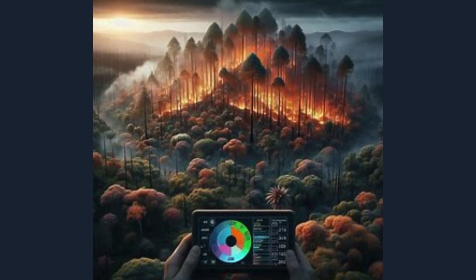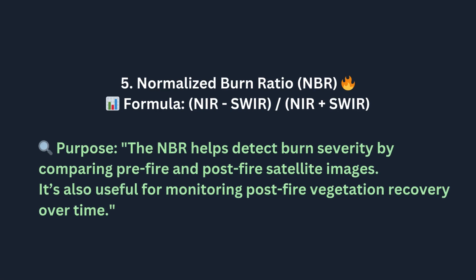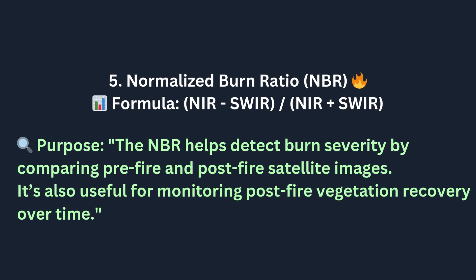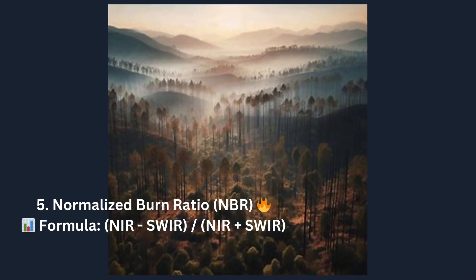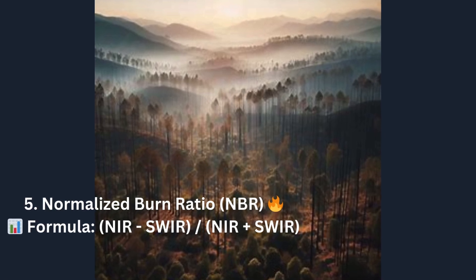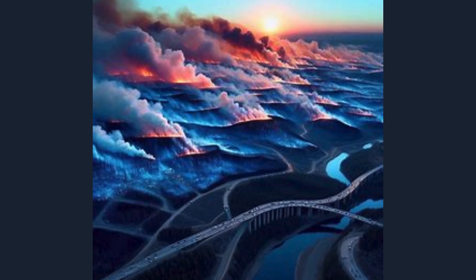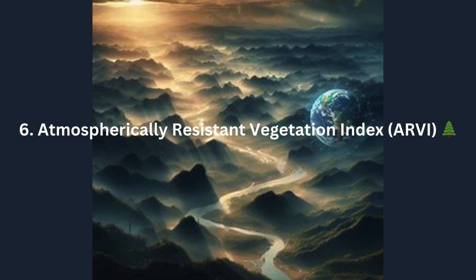Now let's look at an index used in disaster recovery, particularly after wildfires. The fifth index is the Normalized Burn Ratio, or NBR. The formula is: NBR = (NIR − SWIR) / (NIR + SWIR). The NBR helps detect burn severity by comparing pre-fire and post-fire satellite images. It's also useful for monitoring post-fire vegetation recovery over time, helping assess the extent of burns by highlighting areas where vegetation has been damaged or destroyed.